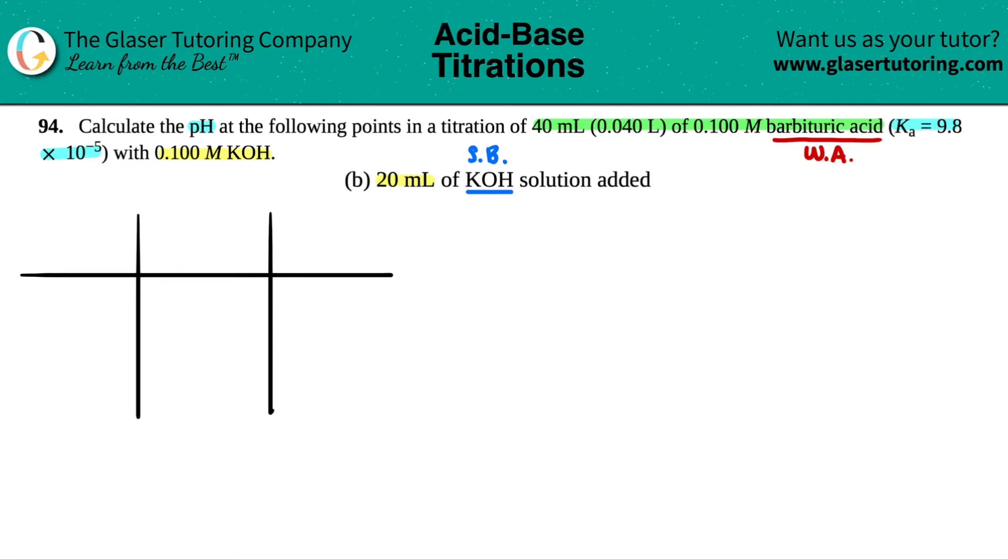Now the rules are as follows. In order to make this pretty easy, the middle section, you see how this is set up into three sections, the middle section is always your strong acid or strong base. So in this case, the strong base is the KOH. And I'm just going to say that this is the strong base, so I'll say SB.